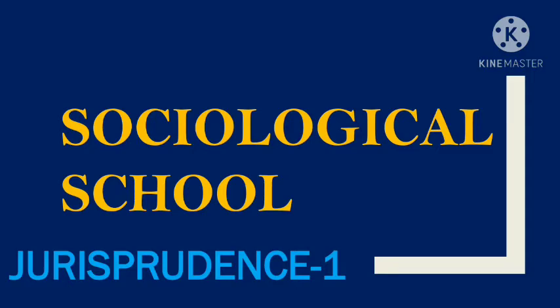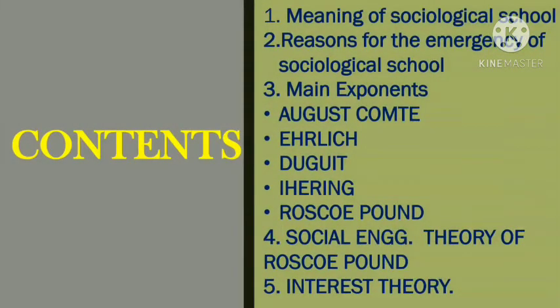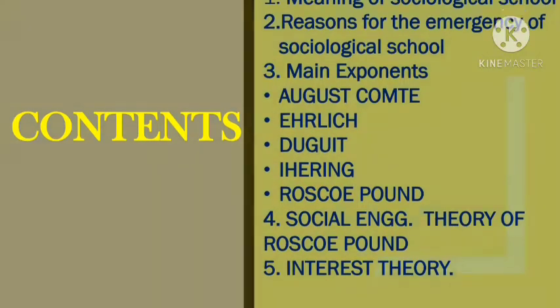In this video we will discuss the meaning of sociological school, reasons for the emergence of sociological school — which means why and how the sociological school developed over time — the sociological school's exponents, and the sociological school's contributions. We will discuss Auguste Comte, Ehrlich, Duguit, Ihering, and Roscoe Pound. Roscoe Pound has given us two theories: the social engineering theory and the theory of interest. We will discuss both theories, so without any further delay, let's jump into the lesson.